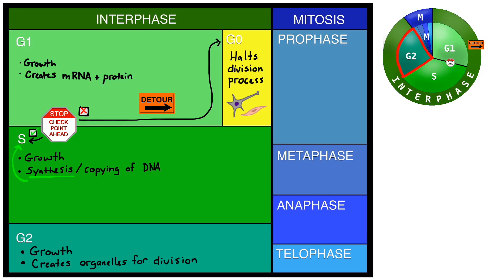The last of the three parts of interphase is called G2. Here the cell will continue to grow and it will also create a few organelles that it needs in order to divide. Before proceeding to mitosis and actually dividing, the cell goes through yet another checkpoint.